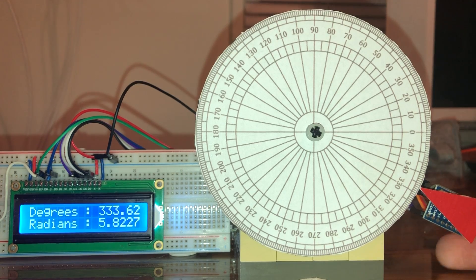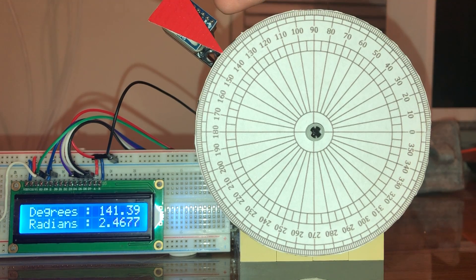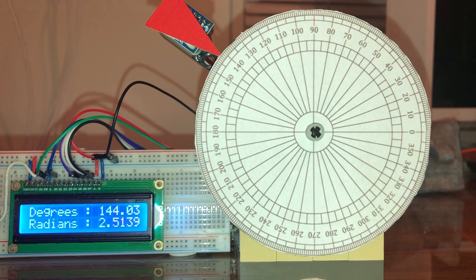Even though it was recorded at every 5 degree increments, even if we take a measurement in between those measure points, for example here 142-ish, 144, our LCD shows a measurement of 144.03 degrees and 2.513 radians.